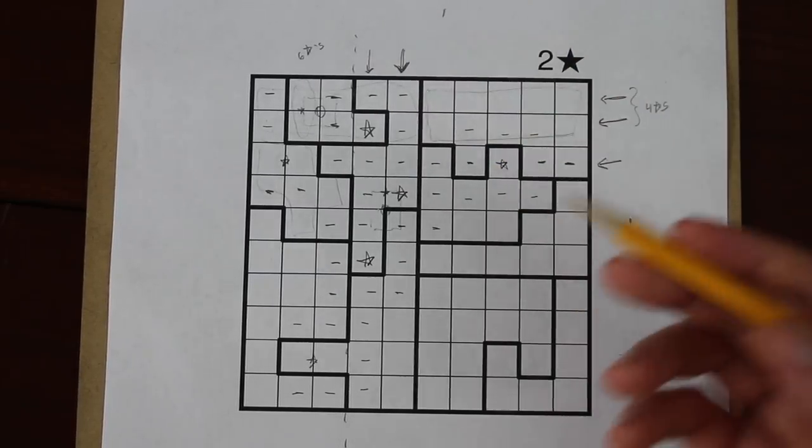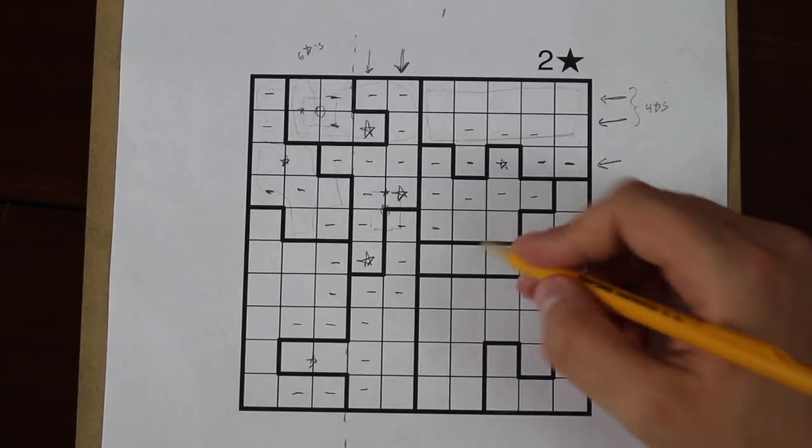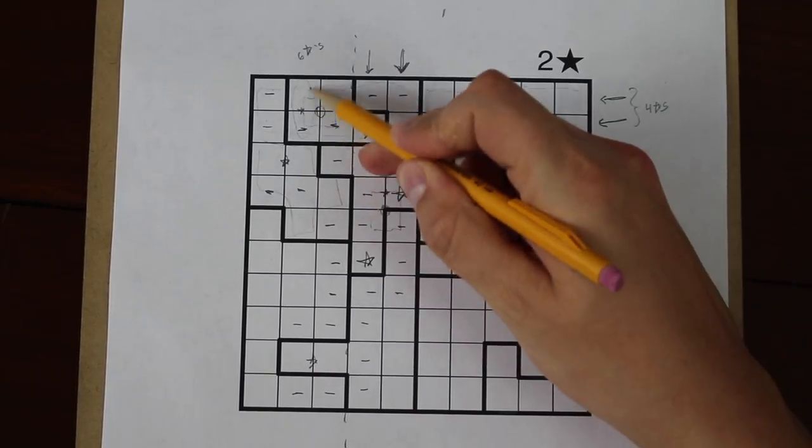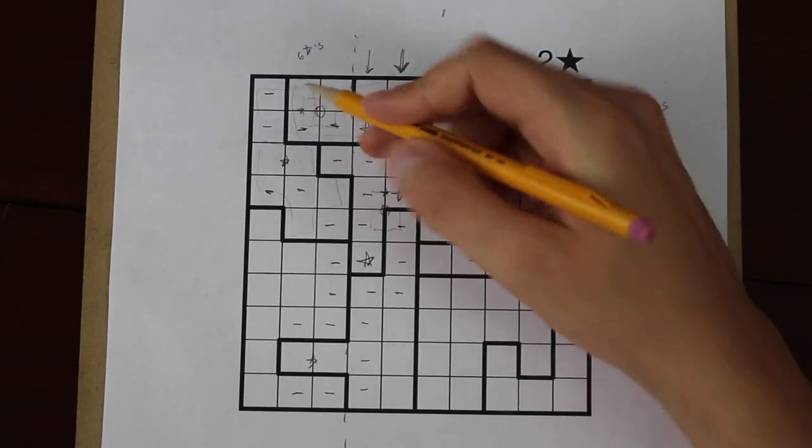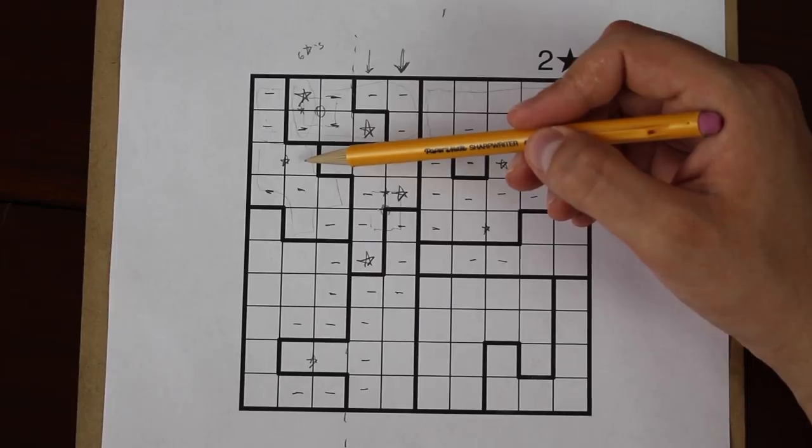There are other ways to get star placements in this puzzle. I'm trying to show a number of different ways that you can use logic. There can't be a star there or it would block off both of these spots. Here's another interesting piece of logic in the star battle puzzle.